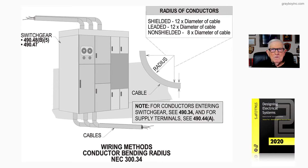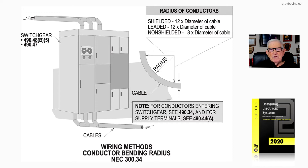Now let's review figure 17-28, dealing with wiring methods when you have conductor bending radii involved in accordance with NEC 300.34. Notice the radius of these conductors: if it's a shielded type cable, it's 12 times the diameter of the cable. If it's a leaded type cable, it's also 12 times the diameter of the cable.